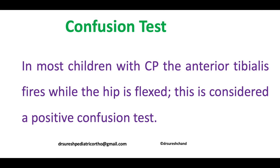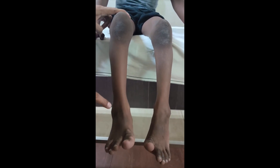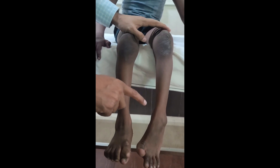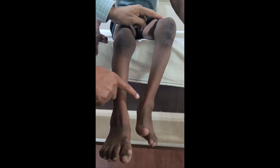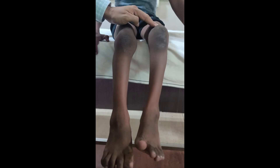Due to spasticity and low selective motor control, the tibialis anterior will be inadvertently used — that is why it is called the confusion test. So the patient is actually flexing the hip, but the action is going to the ankle and foot position.